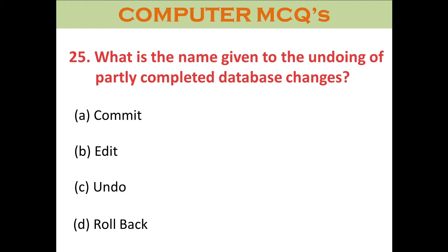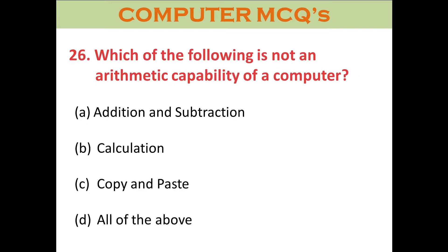Question twenty-five: What is the name given to the undoing of partly completed database changes? A. Commit. B. Edit. C. Undo. D. Rollback. The right answer is D: Rollback.